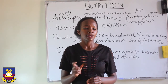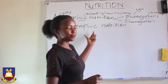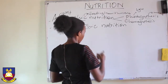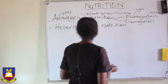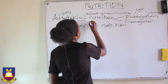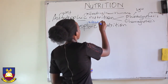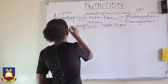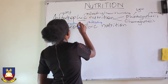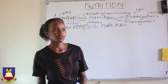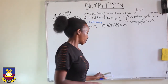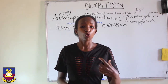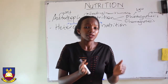Now let's go to heterotrophic nutrition. 'Trophos' again is for feeding or nourishment, and 'heteros' means other. Heterotrophic nutrition is the kind of nutrition where organisms depend on already made food — they do not make their own food. They actually depend majorly on the autotrophic organisms.